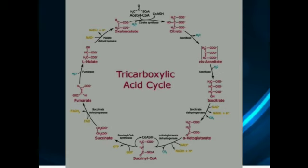Students, remember: two Krebs cycles are required to break down one molecule of glucose. So two ATP, two FADH2, six NADH, and four carbon dioxide molecules are produced per glucose molecule.